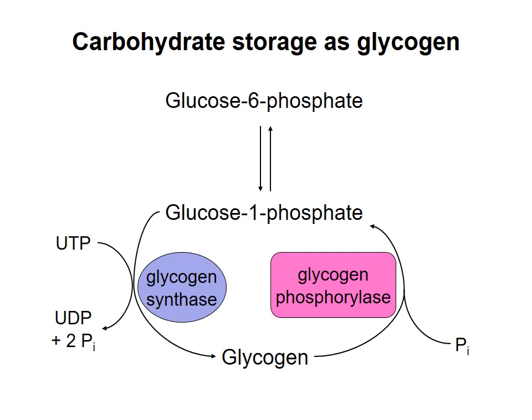In the last video, I described how glucose 6-phosphate and glucose 1-phosphate are interconverted in an equilibrium reaction. G1P is added to glycogen in an irreversible reaction catalyzed by glycogen synthase, which uses UTP hydrolysis as an energy source. Glucose is removed from glycogen in a separate irreversible reaction catalyzed by glycogen phosphorylase, which is spontaneous under cellular conditions. From these points about the energetics of the reactions, it makes sense that glycogen metabolism is regulated not at the reversible interconversion of G1P and G6P, but by controlling the activities of glycogen synthase and glycogen phosphorylase.